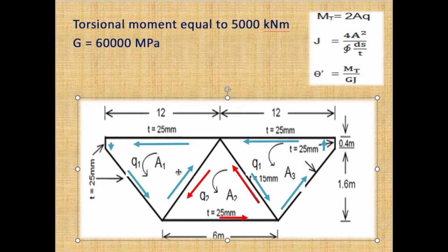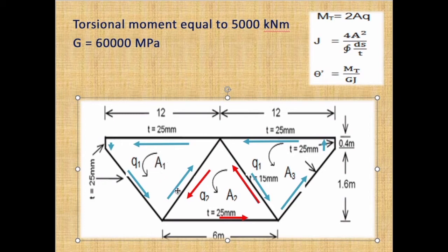We mark the flow in the anticlockwise direction in panel 1 and panel 3. Similar to fluid mechanics, the flow will be anticlockwise in those outer panels. If we consider this particular arrangement, the flow in panel 2 will be in the opposite direction to panel 1. We have to note this when doing the calculations.